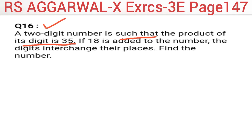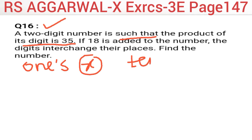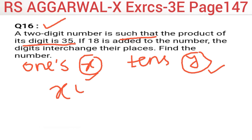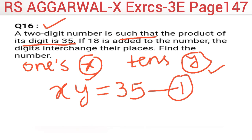So students, here what has been given is that we have a two-digit number, and the product of its digits is 35. Let's say the ones digit is x and the tens digit is y. So we have two variables to solve, and generally our equation should be plus or minus separated so that we can solve it.